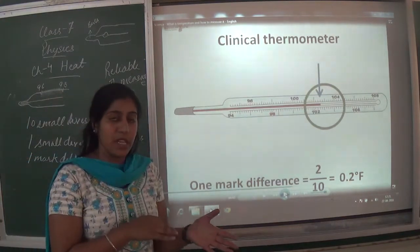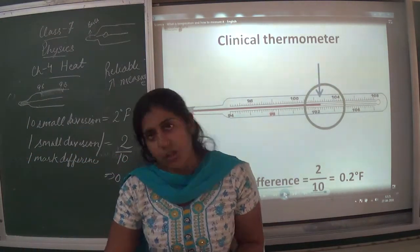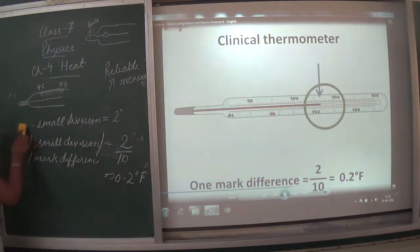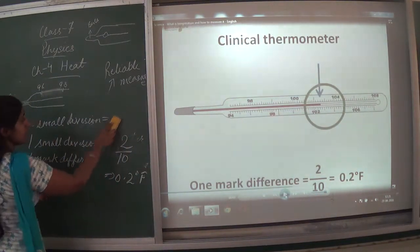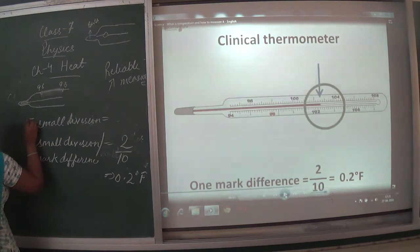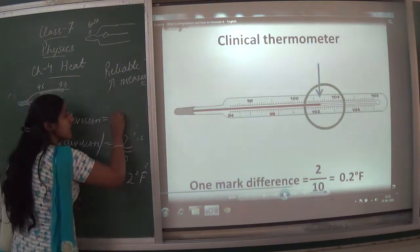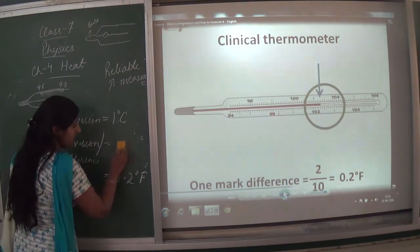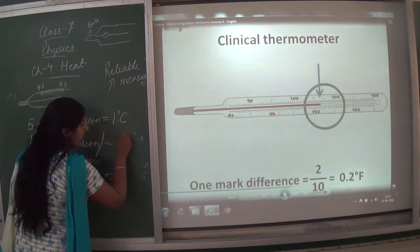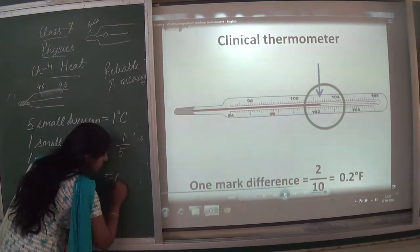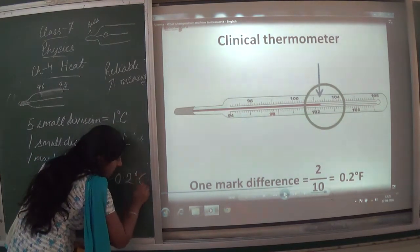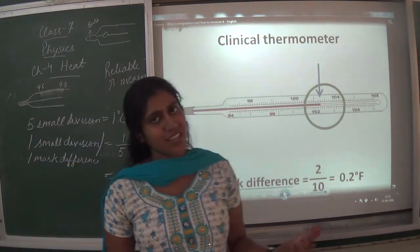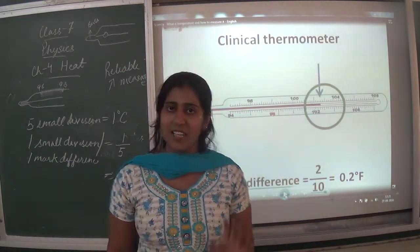This can also be used for measuring in Celsius. In Fahrenheit, 10 small divisions equal 2 degrees, so 1 small division equals 0.2°F. In Celsius, 5 small divisions equal 1 degree Celsius, so 1 small division equals 1/5 = 0.2 degree Celsius. So we can measure a 0.2-degree mark difference for both Celsius and Fahrenheit scales.